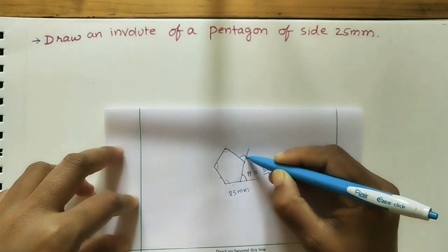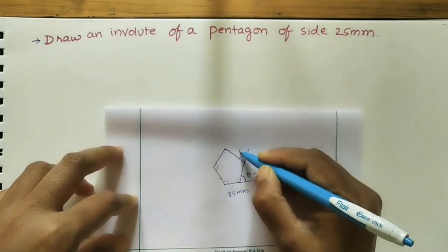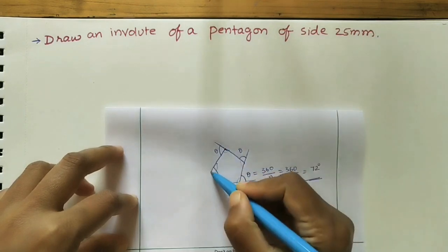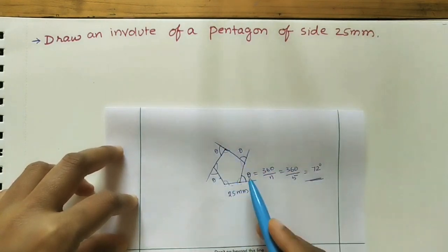At all outer angles, the angle is same. It is 72. Theta equals 72, here also it is 72, here also it is 72. So all outer angles have same value.